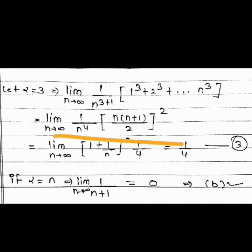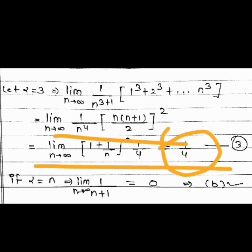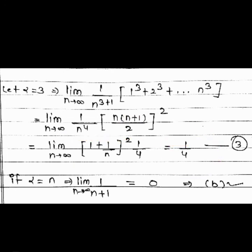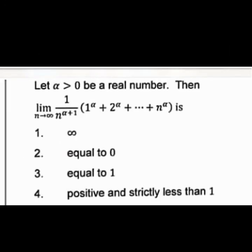For α = 3: the sum of cubes is [n(n+1)/2]². Dividing by n^4 and taking the limit gives 1/4. Again positive and strictly less than 1. In all cases the limit is positive and strictly less than 1, confirming option D is correct. So in today's video we discussed three questions from the December 2019 Assam Higher Secondary Real Analysis Part B exam. See you in the next video — don't forget to like, share, and subscribe!